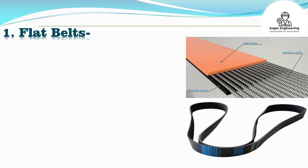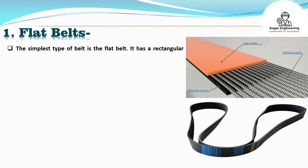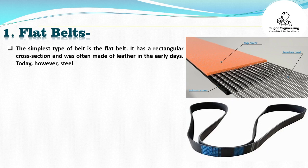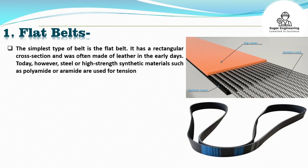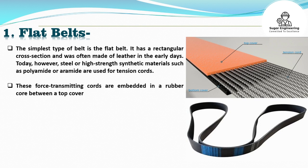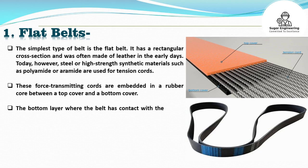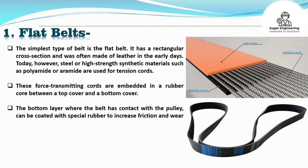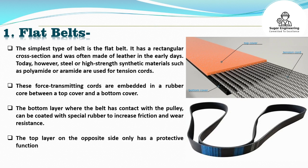Flat belts: The simplest type of belt is the flat belt. It has a rectangular cross-section and was often made of leather in the early days. Today, however, steel or high-strength synthetic materials such as polyamide or aramid are used for tension cords. These force-transmitting cords are embedded in a rubber core between a top cover and a bottom cover. The bottom layer, where the belt contacts the pulley, can be coated with special rubber to increase friction and wear resistance. The top layer on the opposite side only has a protective function.